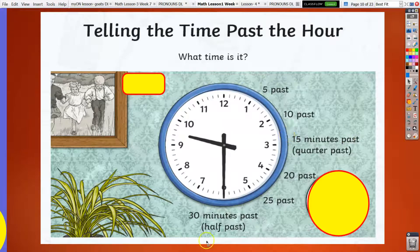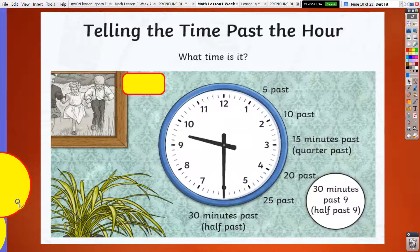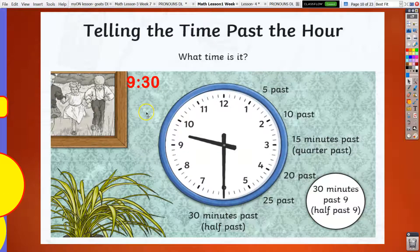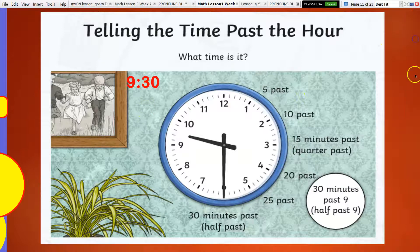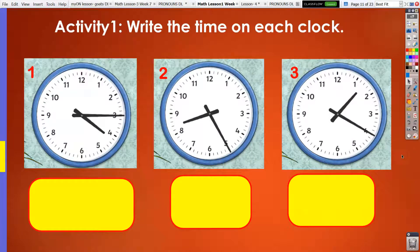What time is it? It's 30 minutes past 9, or half past 9. Also, we call it 9:30. Now, let's answer activity 1. Write the time on each clock. You have 3 minutes to do this. Pause the video and do the activity.